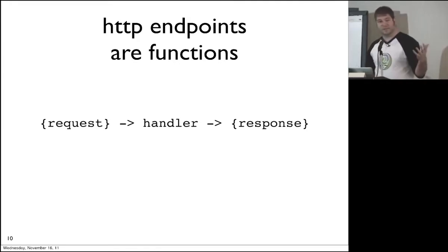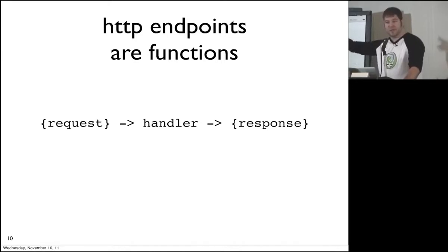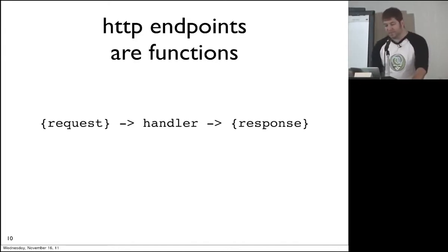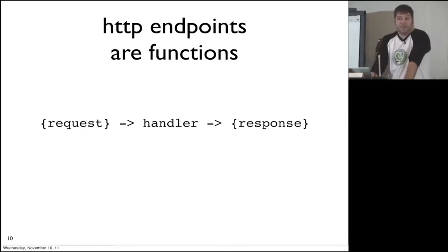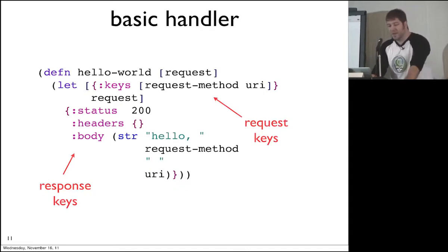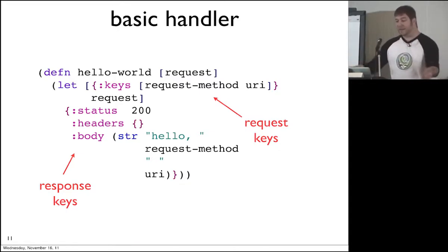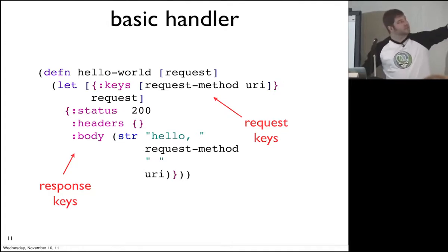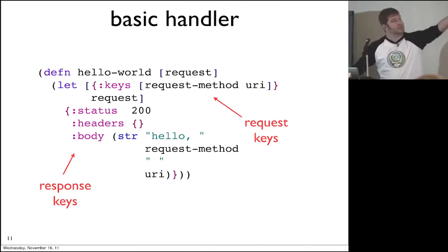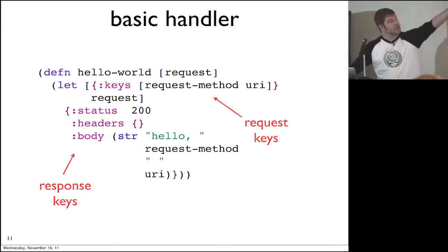Ring basically treats endpoints as functions. You get a request, you can stick an arbitrary number of handlers in, and you get a response that you send back. It is treated very functionally — just application of functions once the servlet bits are understood. A basic handler looks like this. This is Ring straight out, no additional libraries, no wrappers. We define a function, give it an argument list — in this case just one, the request.